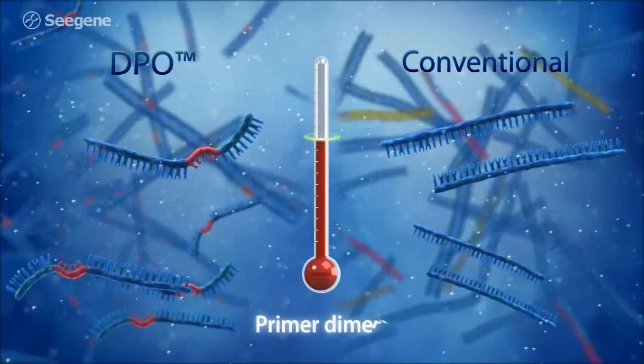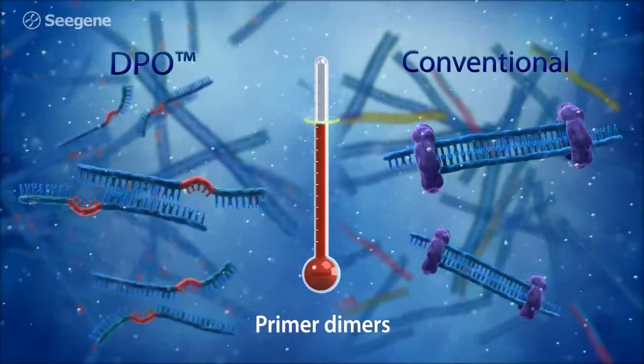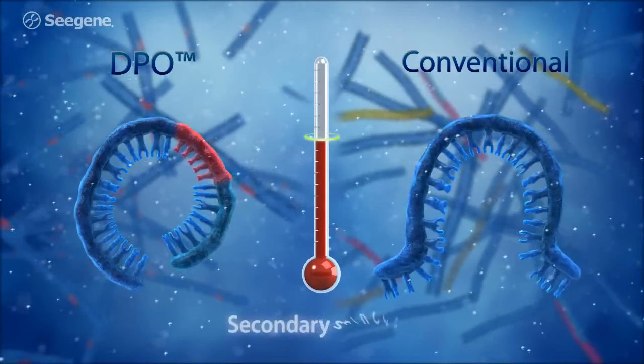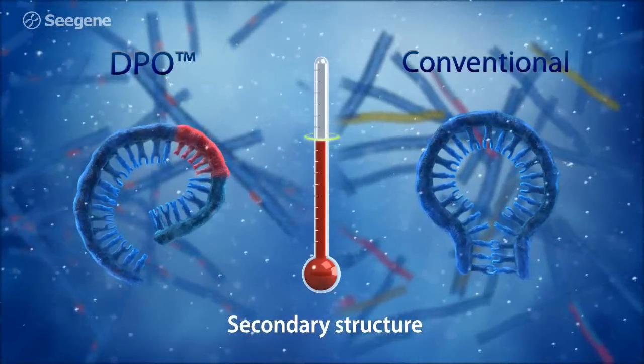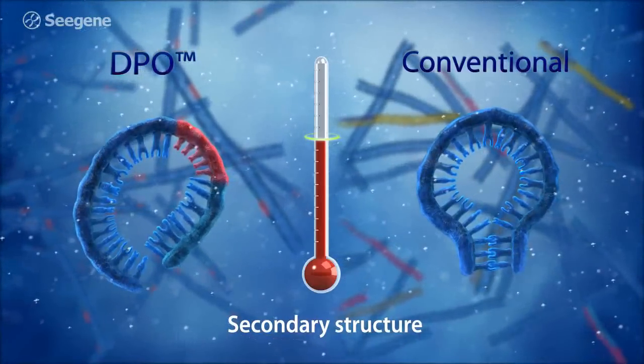Other barriers of multiplex PCR are primer dimerization and secondary structures that interfere with the primer's ability to bind to its target region. DPO primers fundamentally cannot form dimers and complex secondary structures, allowing them to perform outstandingly in multiplex reactions.